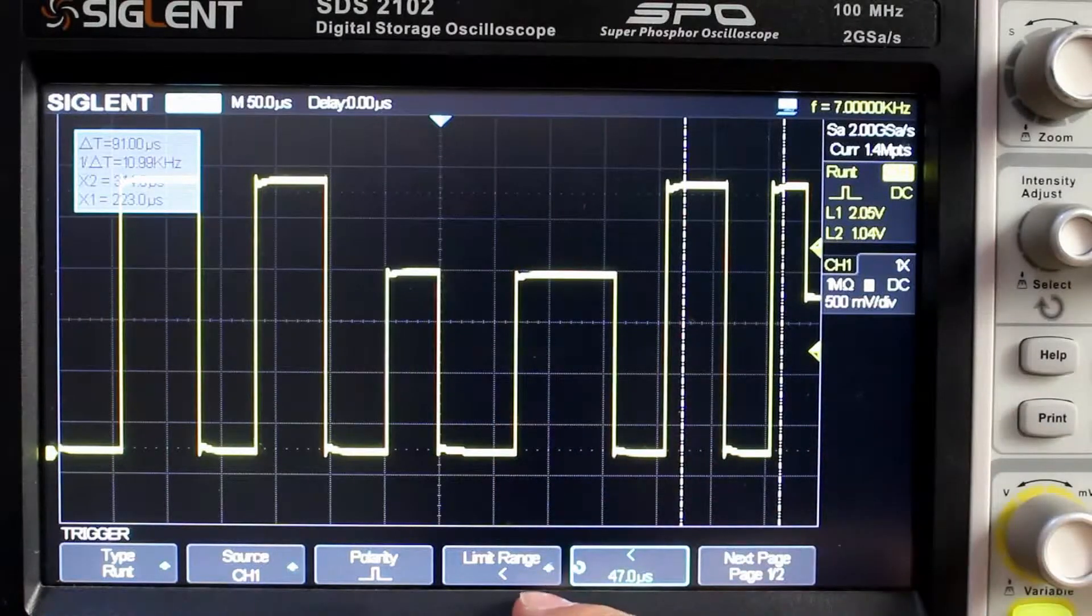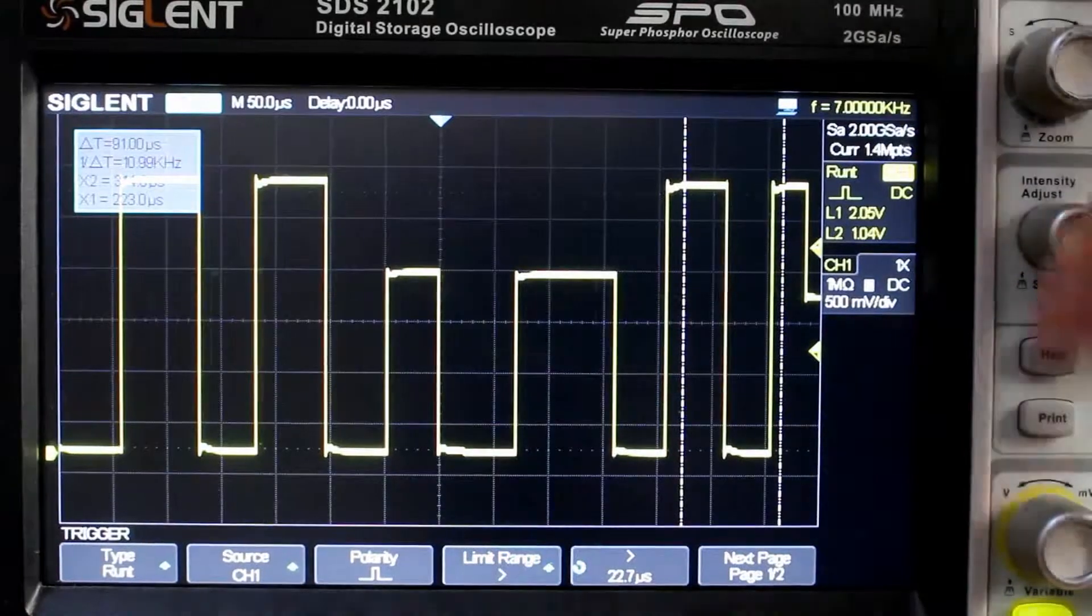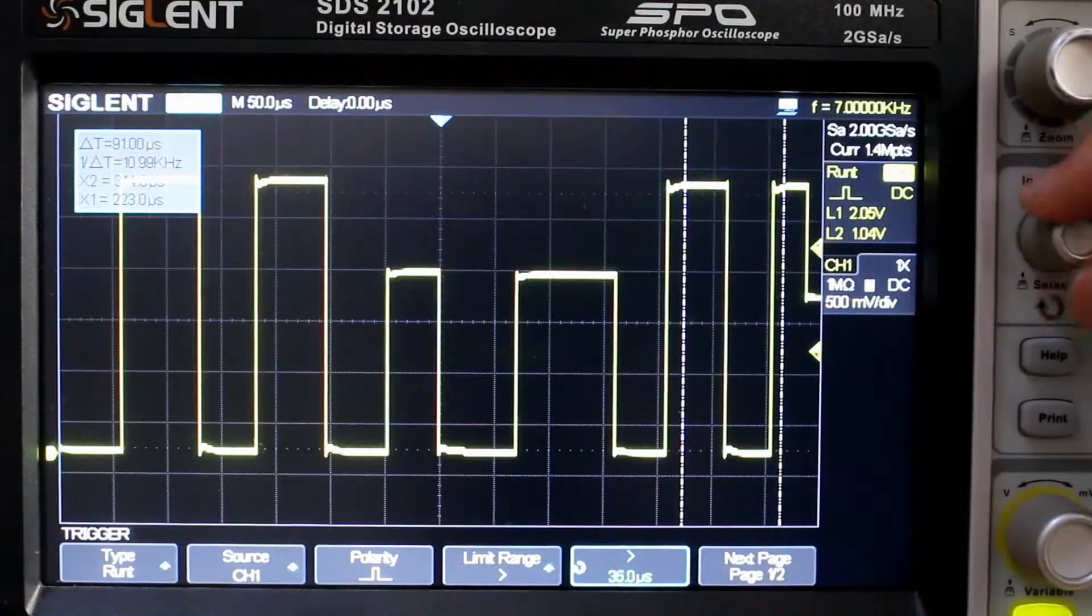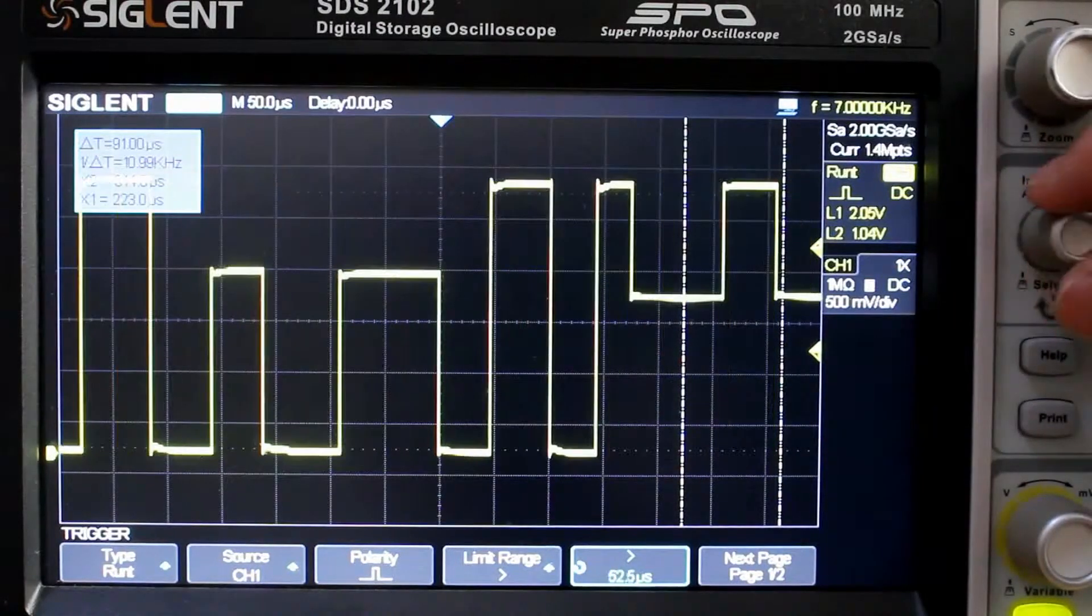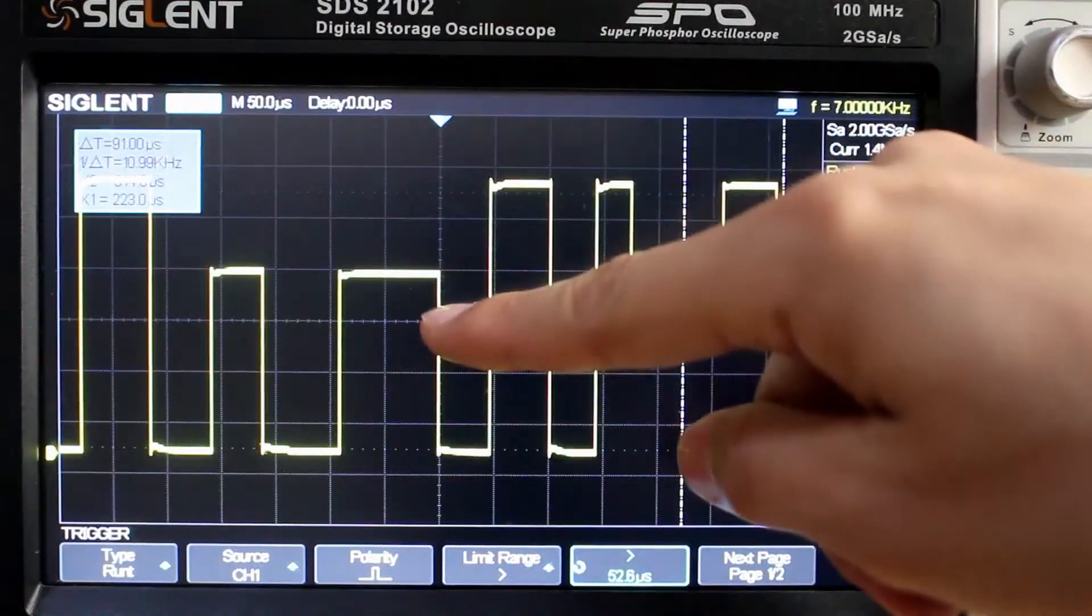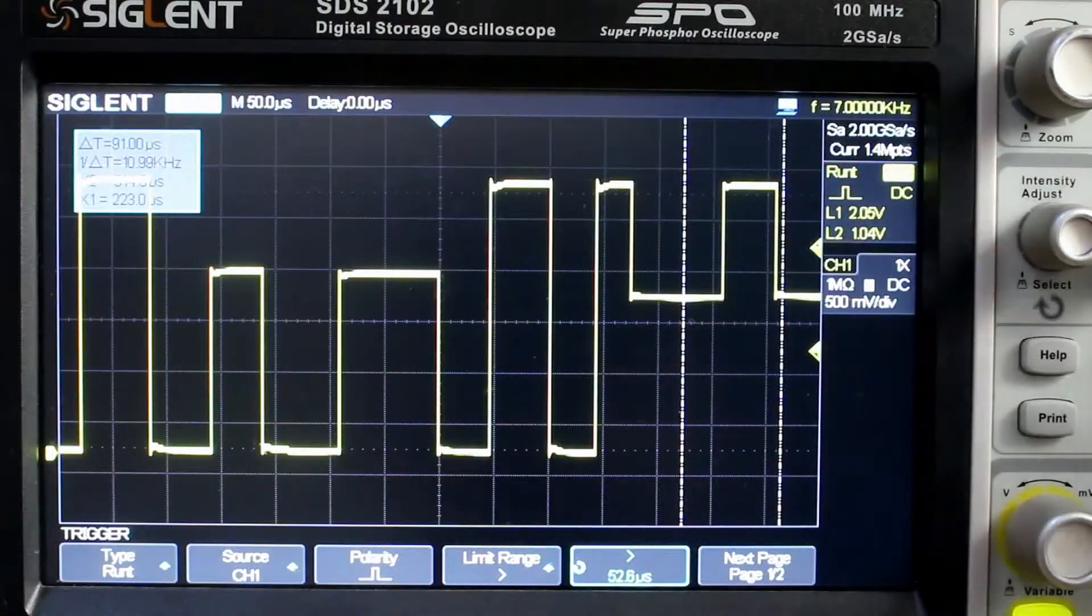Then if we change that limit range, and we can go to greater than, and we go up to anything above 47, now we are triggered at the wider one, yeah. So that's how the RUNT trigger type works.